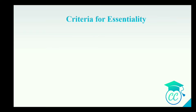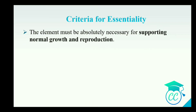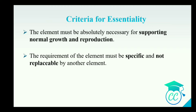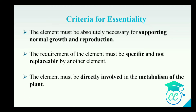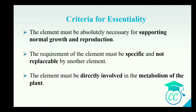What is the criteria for essentiality? There are three criteria for essentiality. The element should be supporting for the normal growth and reproduction. The second criteria is the element should be specific and not replaceable by another element. And the third criteria is the element should be directly involved in the metabolism of the plant. Based on this criterion, few elements have been absolutely essential for plant growth and metabolism.